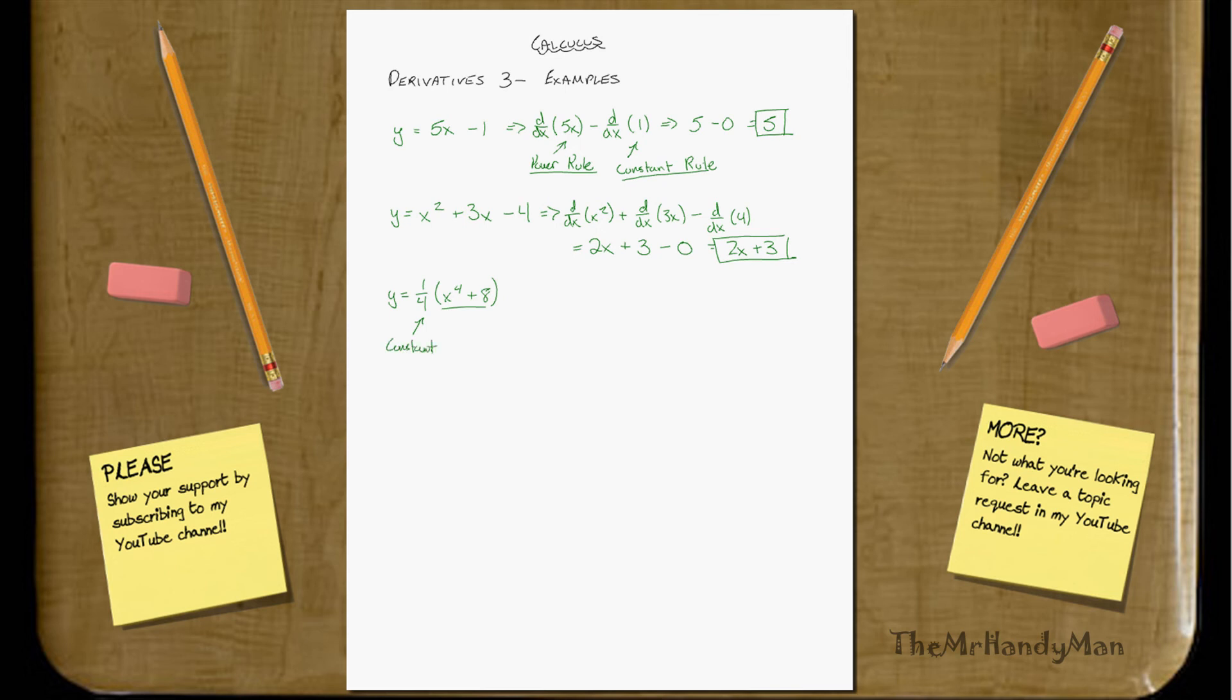So all you have to do is pull that out. So the derivative of it is 1 fourth, as you can see, multiply it outside, and then everything that's inside of it. So that would be 4x cubed plus 0. Or if you work out the arithmetic, you'll notice that essentially this 4 and this 1 fourth kind of cancel each other out. And all you have is x to the third power. Kind of neat.